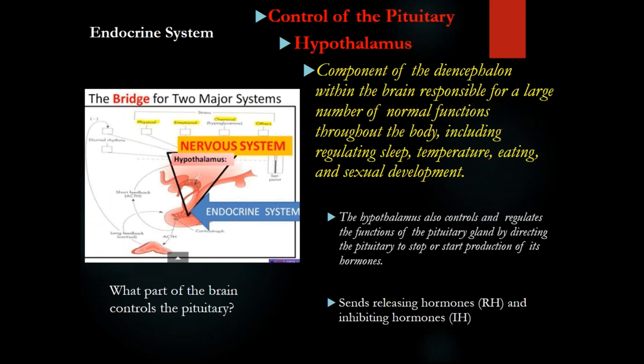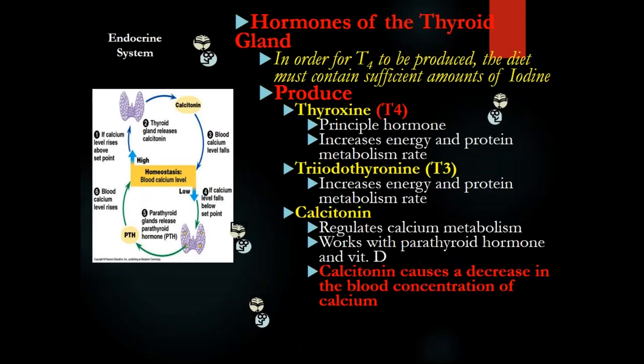Don't forget aldosterone. Aldosterone reabsorbs sodium in the kidney. Sodium is followed by water, so if you eat more sodium, you retain more water, increasing blood volume and vessel pressure. If someone has hypertension, the first thing to tell them is don't take salt — decreasing salt reduces water reabsorption, lowers blood volume, and helps control blood pressure.